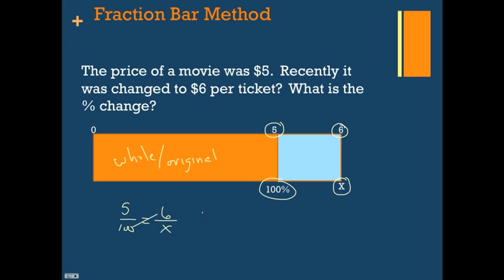And then we'll use our algebra to solve this. We can cross multiply. 100 times 6 is 600. 5 times x is 5x.